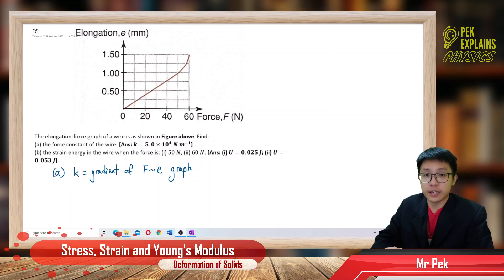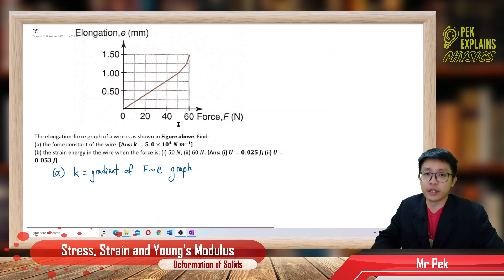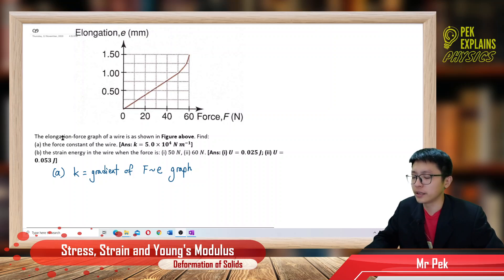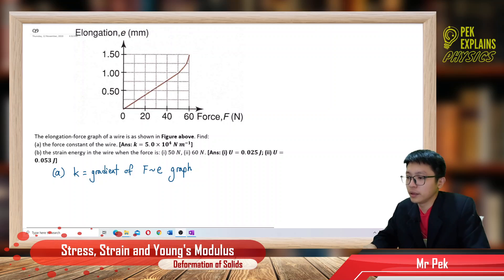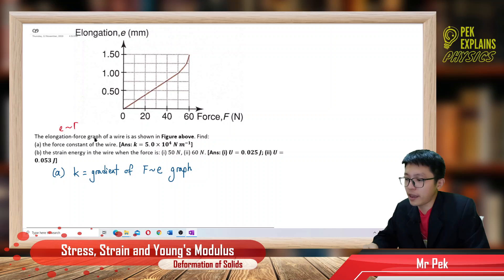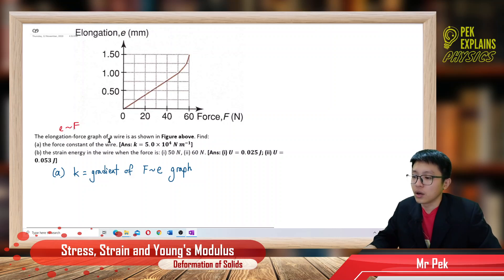Now question 9 is about the force elongation graph. But this one is an elongation force graph — special. The elongation force graph is actually the E versus F graph, instead of F versus E. This is the E versus F graph of a wire as shown in the figure above.